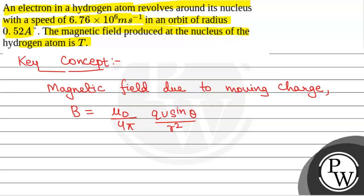We will put the values. Mu0 by 4 pi is equal to 10 to power minus 7. And q in this case will be the charge on electron, that is 1.6 times 10 to power minus 19.